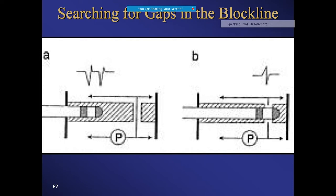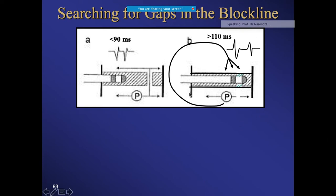This concept was proposed by Tada et al., who reported that the interval separating the two components of a double potential distinguishes complete from incomplete isthmus block: more than 110 milliseconds indicates complete block, while less than 90 milliseconds indicates incomplete block in patients undergoing RF ablation for typical atrial flutter.